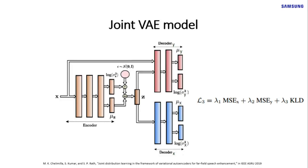The joint VAE is trained using the loss described in equation L3. We train an acoustic model jointly with this joint VAE. The mean of the upper decoder, μ_Y, is given as input to the acoustic model, which then predicts senone classes. This whole model is trained jointly using a final loss of L3 plus lambda times cross-entropy. This way, the acoustic model is trained on predicted FMLLR-normalized features.